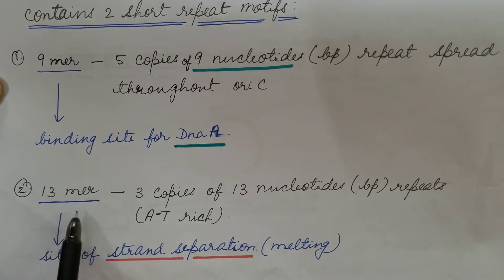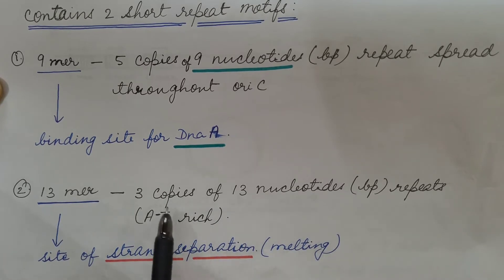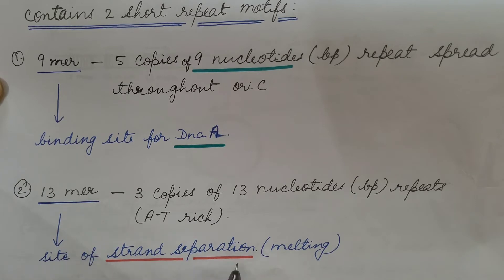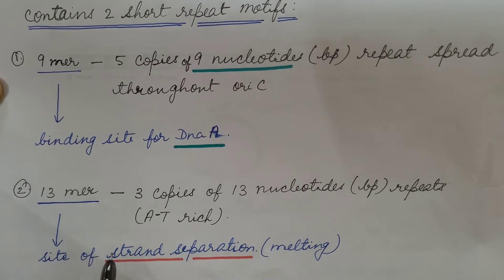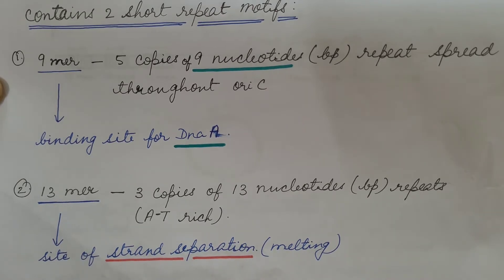Second is 13-mer. It is 3 copies of 13 nucleotides or 13 base pair repeats and this is AT-rich region. It is the site of strand separation or melting. So it is the site where hydrogen bond breaks and the two strands separate from each other.